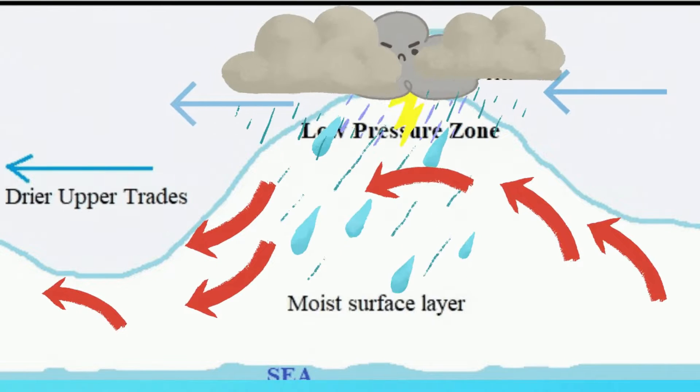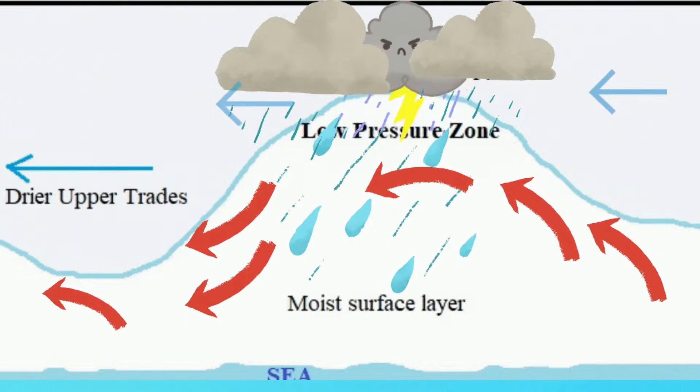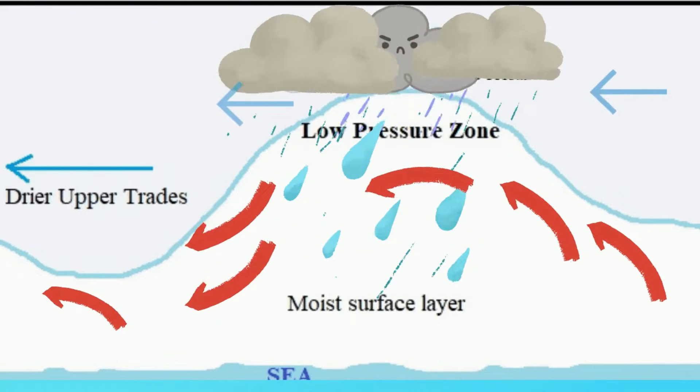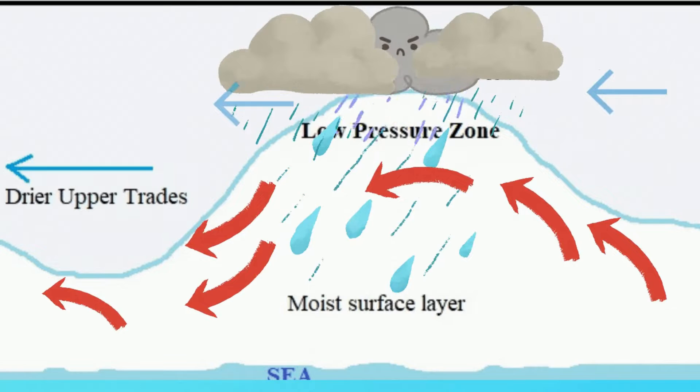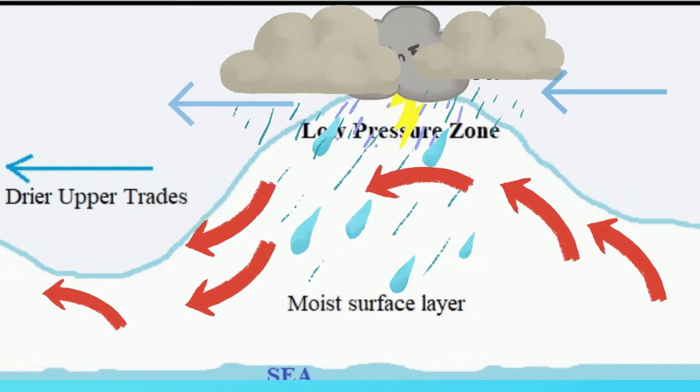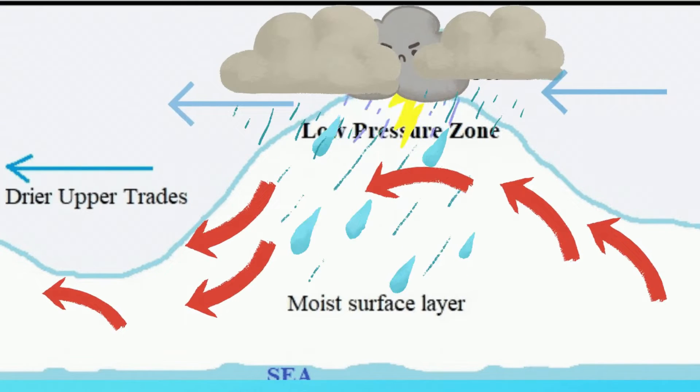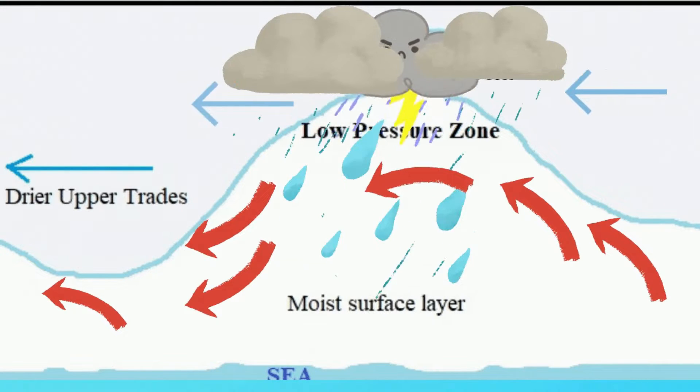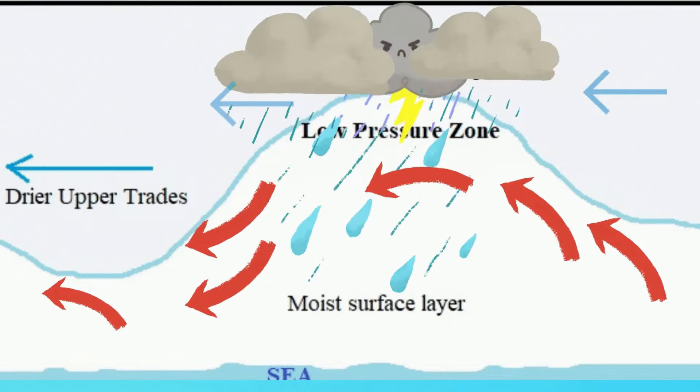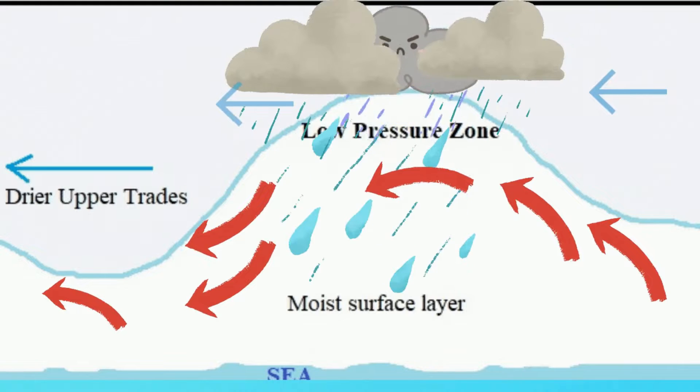As the air is lifted, low pressure conditions are created at the surface. This pulls in air and therefore results in winds. The rising air will soon begin to cool until it condenses to form rain-bearing clouds.